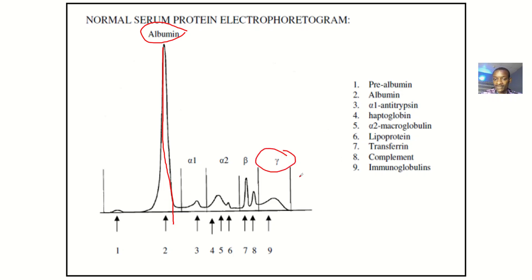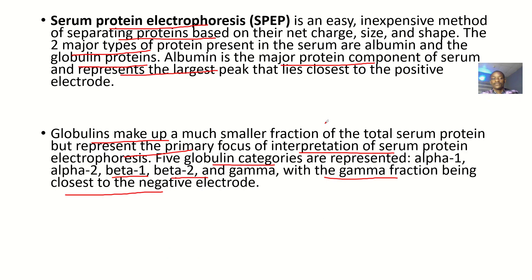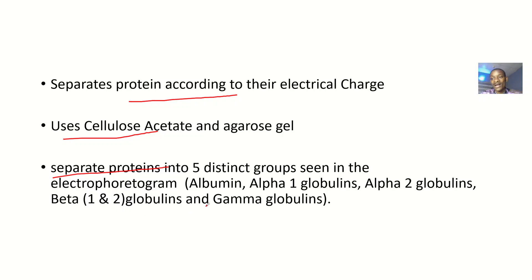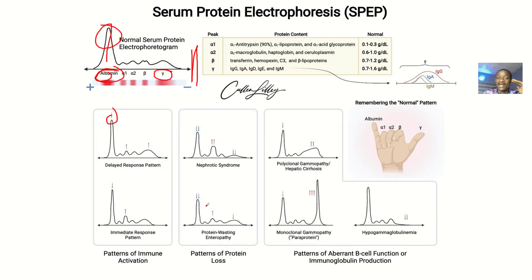Serum protein electrophoresis separates proteins according to their electrical charge using cellulose acetate or agarose gel. It separates proteins into five distinct groups as seen in the electrophorectogram: albumin, alpha-1 globulins, alpha-2 globulins, beta-1 globulins, beta-2 globulins, and gamma globulins. That covers the concept of serum protein electrophoresis.